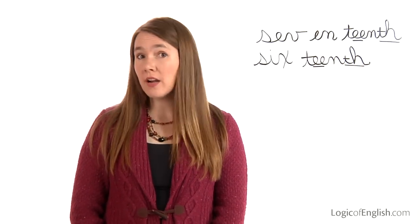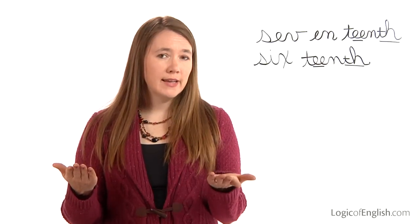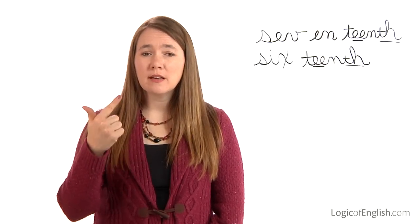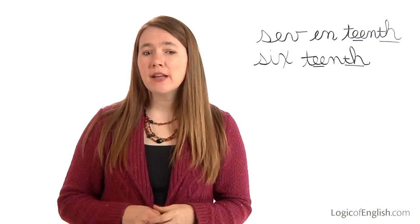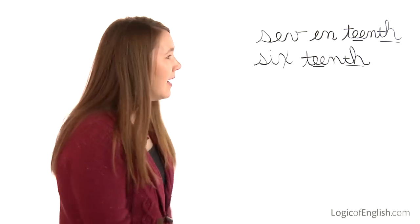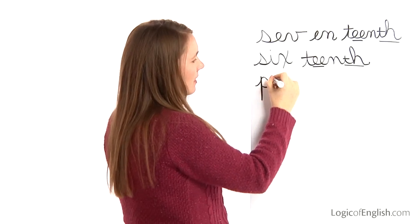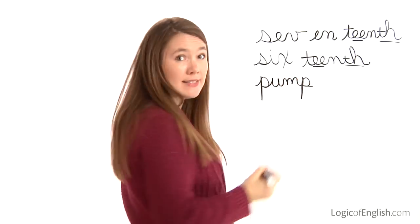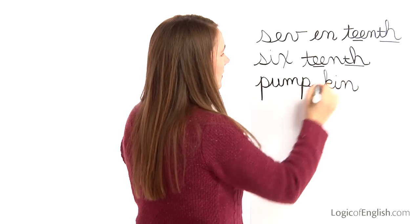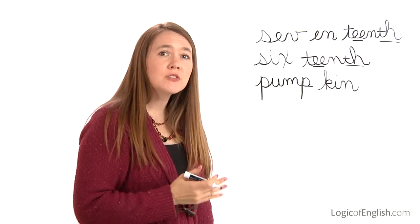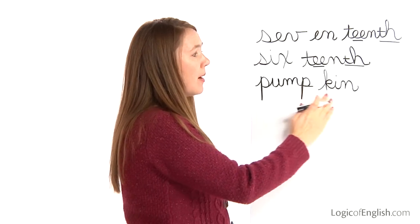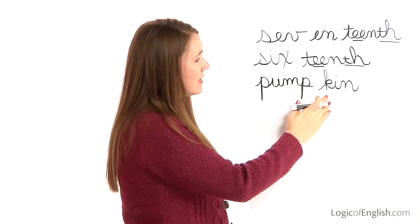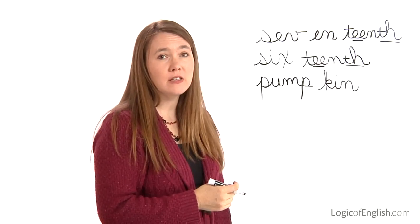The next word is pumpkin. Did you carve a pumpkin on Halloween? How many syllables in pump-kin? Two. The first syllable is pump: P, u, m, p. The second syllable is kin: k — this will be a tall k — i, n. P, u, m, p. K, i, n. Now, we used a tall k here. There's a rule we haven't learned yet, but C softens to s before an e, i, or y. So if we used a C here, it would say pump-sin. And we can't use a two-letter k here because it's not after a single short vowel. So our only option is to use the k in pumpkin.